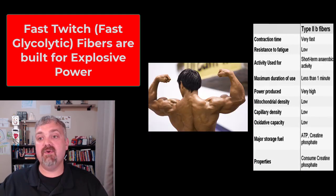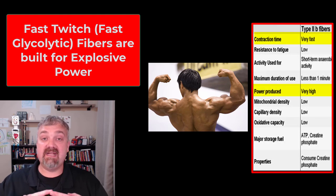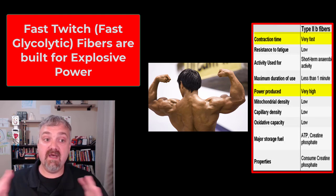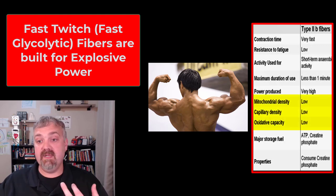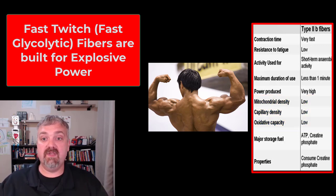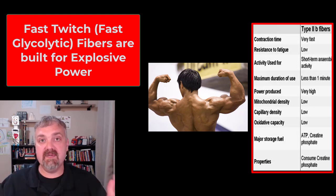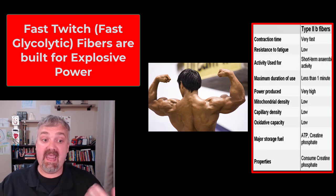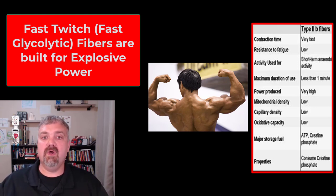Next we have quick twitch fibers, also known as fast glycolytic fibers or type 2b fibers. These contract very quickly and very explosively. They have a large diameter so they can generate a ton of power. Their energy reserves are glycogen and they can break glucose down anaerobically, but they don't have a big blood supply or a lot of mitochondria. These are going to be very pale or white in color and they run out of fuel very quickly. They are for short-term bursts of activity. Aerobic respiration of glucose can get you 36 ATP, while anaerobic glycolysis gives you a net gain of only 2 — so you can see why they run out of fuel so quickly.